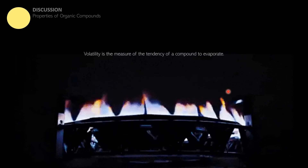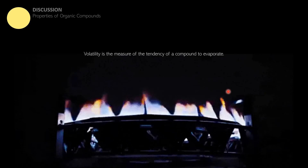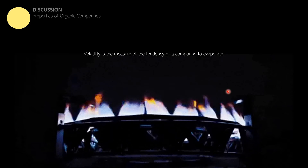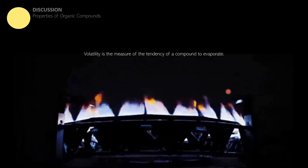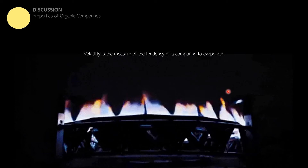The next property is volatility. It is the measure of the tendency of a compound to evaporate — the tendency of a material to turn from liquid state to gaseous state. Ethyl alcohol, for example, is supposed to be liquid when kept inside the bottle, but at room temperature it can also evaporate because it absorbs kinetic energy from the surroundings, making it turn from liquid to gas.